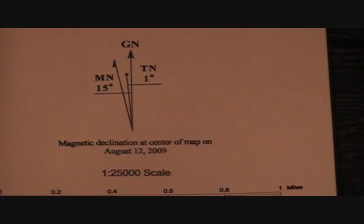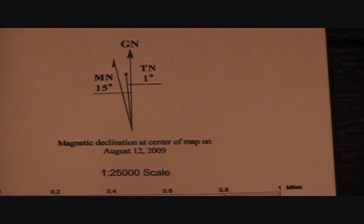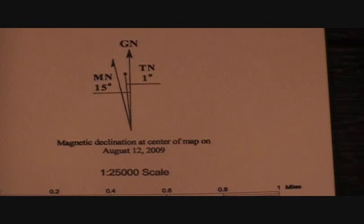So that's what your compass is going to give you. The little TN to the right is showing one degree — it's one degree different between true north and grid north on this particular map. Every map is going to be different, same thing with magnetic north. So the difference between my map, which is grid north, and my compass is going to be 15 degrees.